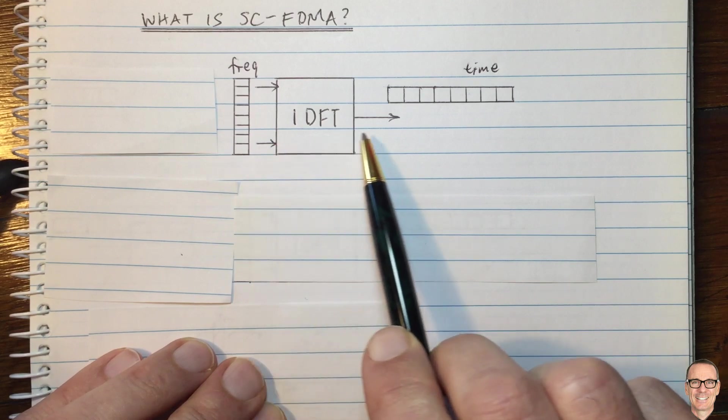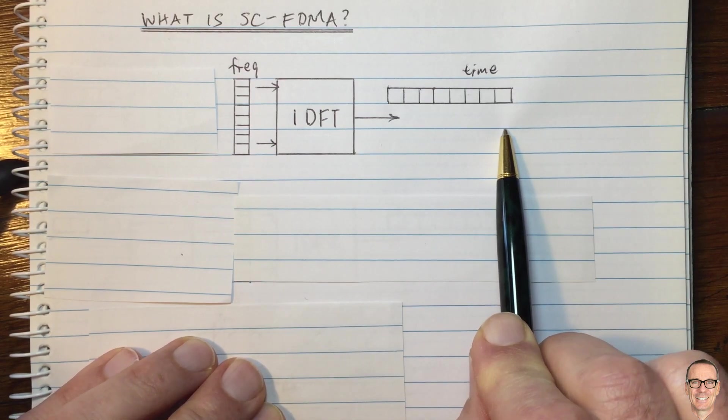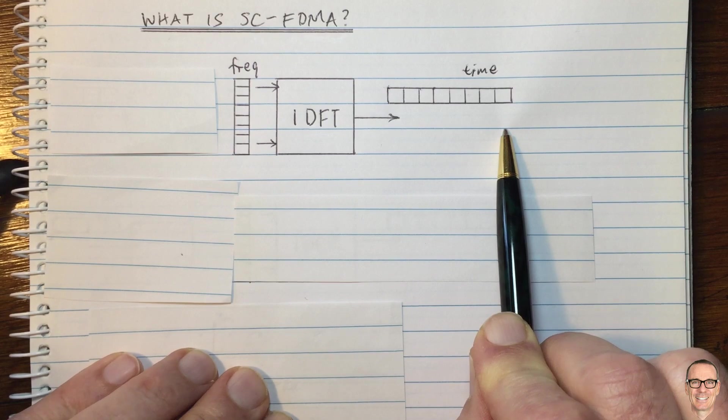Well, let's start by looking at OFDM, which is used in the downlink. And you can find videos on OFDM on the channel.